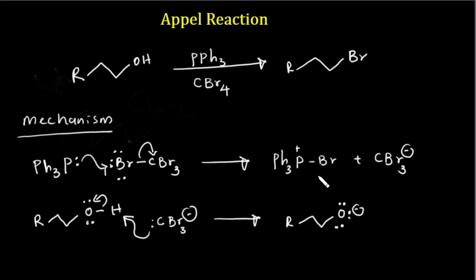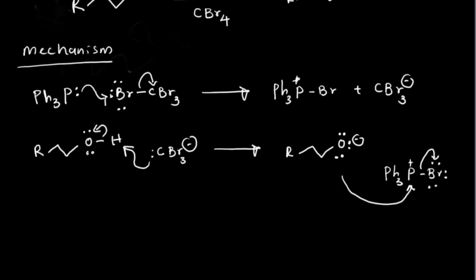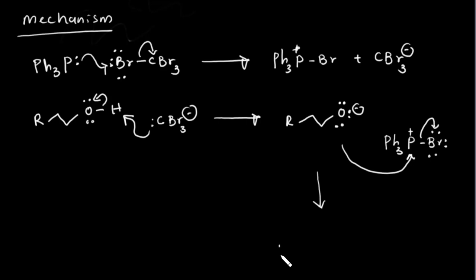Now we have the triphenylphosphine bromide intermediate — this cation — and it comes in here. You can see this anion attacks this cation, removing the bromide, so we have the R-O-PPh3 plus species and bromide minus.